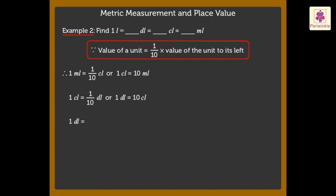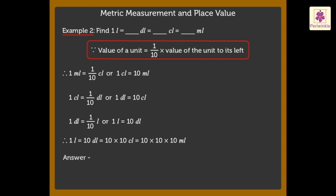And one litre is equal to ten decilitres. So, one litre equals ten decilitres, equals one hundred centilitres, equals one thousand millilitres.